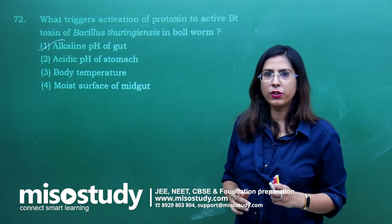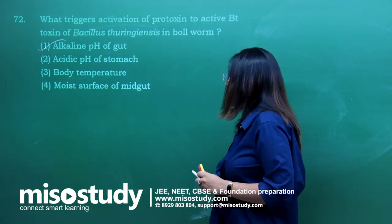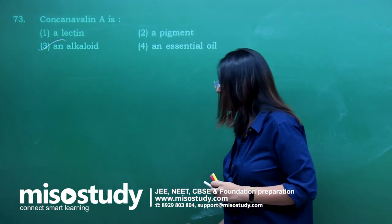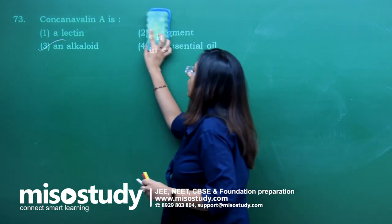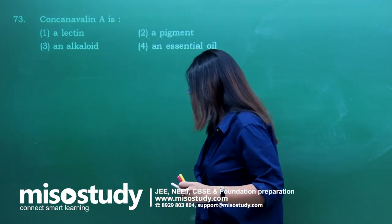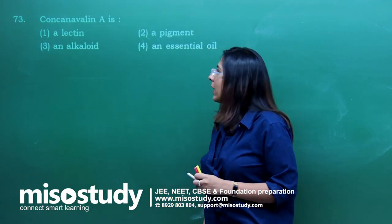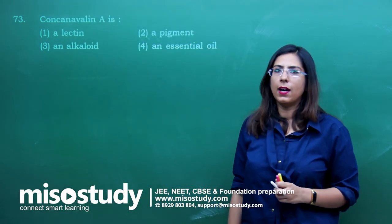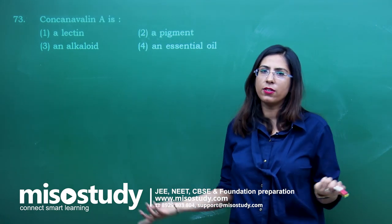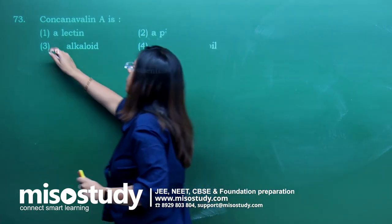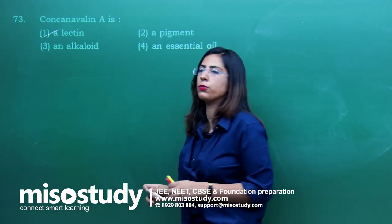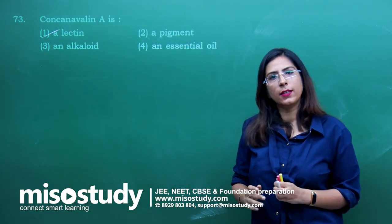Question number 73 — Concanavalin A is a lectin. This is a direct question. Option 1 is correct.